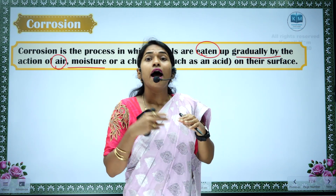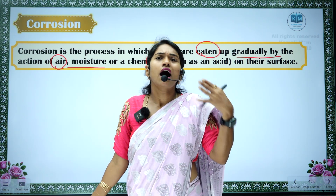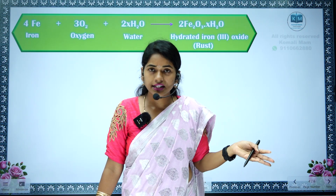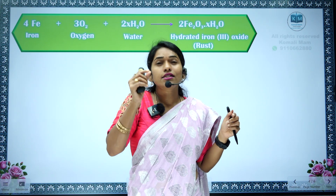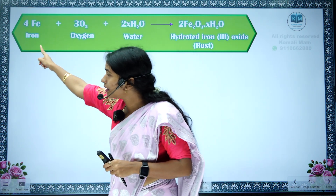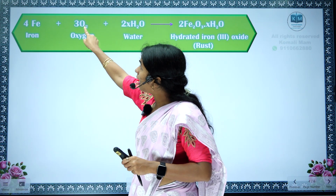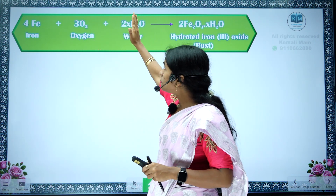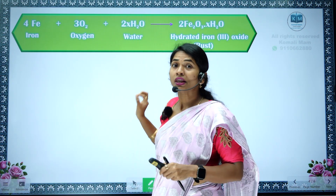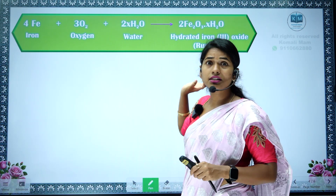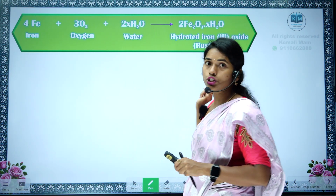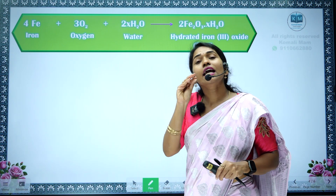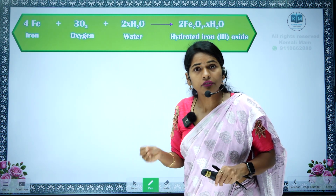Mostly iron — iron gates will be there. If you don't put paint on the iron gates, rust will form. Iron reacts with oxygen (O2) present in the air, and in the presence of some molecules of water, it results in the formation of rust. What is this rust? Fe2O3·xH2O, where X is the number of molecules of water, which is not fixed.